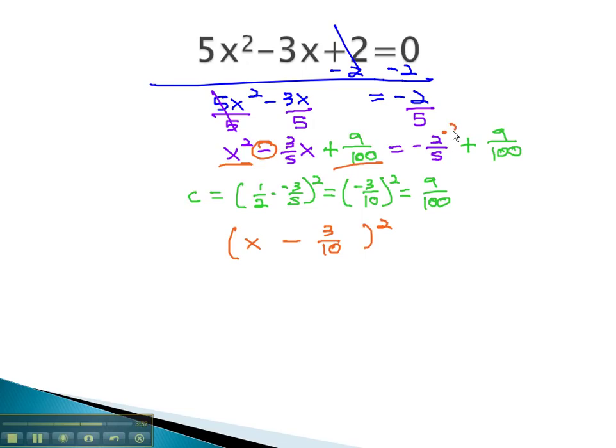On the right side, we need to multiply by 20 to get a common denominator, -80/100, plus 9/100.